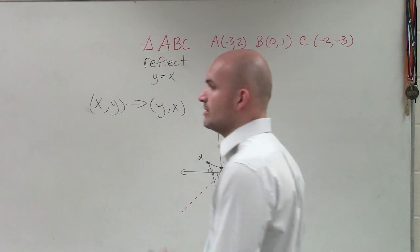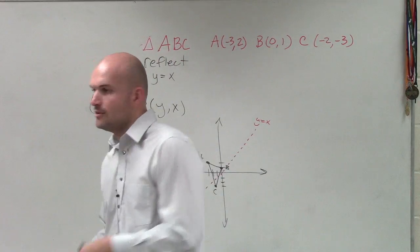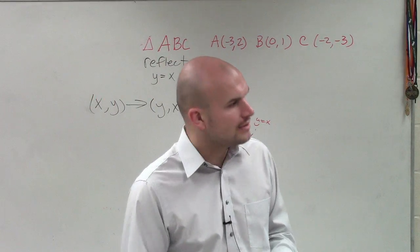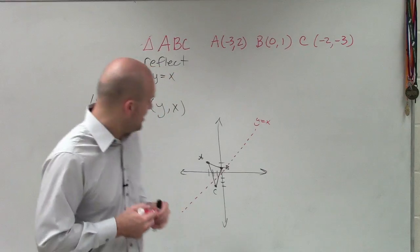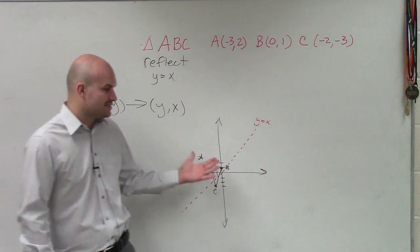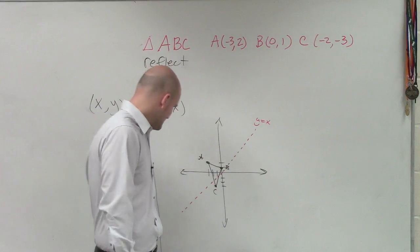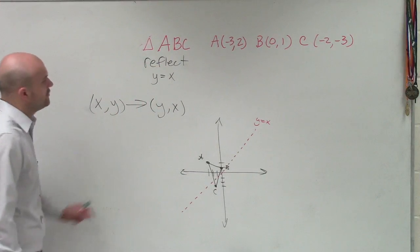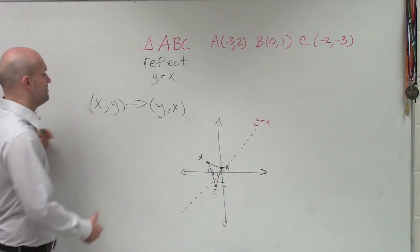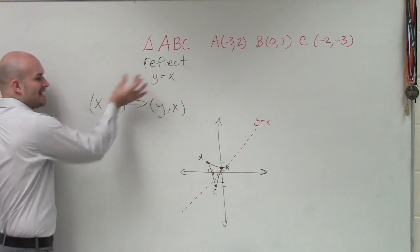When x equals 1, y equals 1. When x equals 2, y equals 2. When x equals 10, y equals 10. That's the y equals x line. But it might be a little difficult for you guys to try to reflect this over this line. So what I prefer to do is follow the rule that we have. If you're reflecting over the y equals x line, if you have a coordinate point, you just swap them.